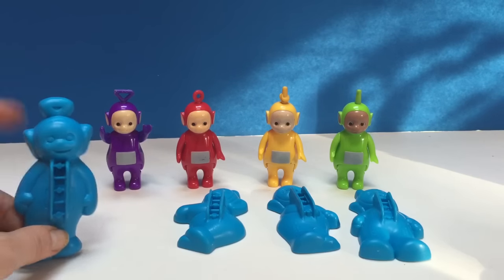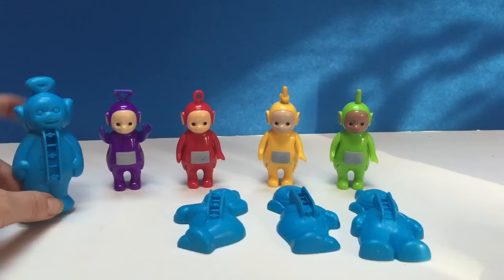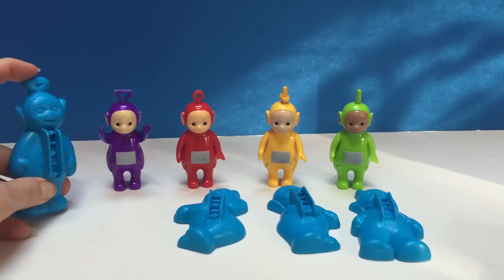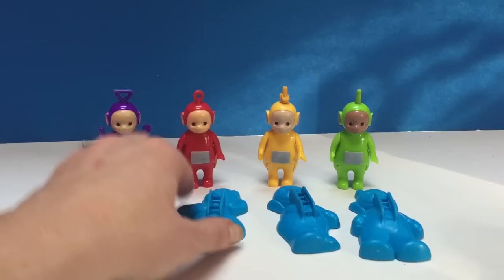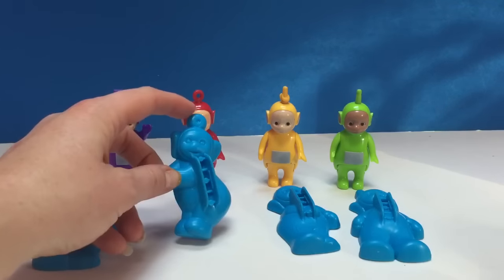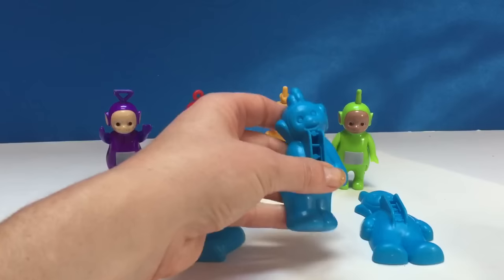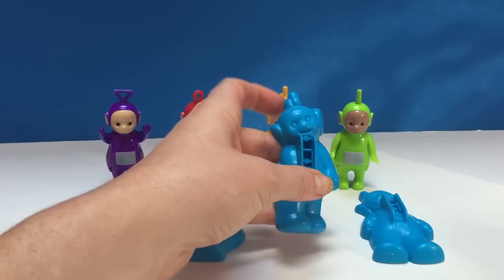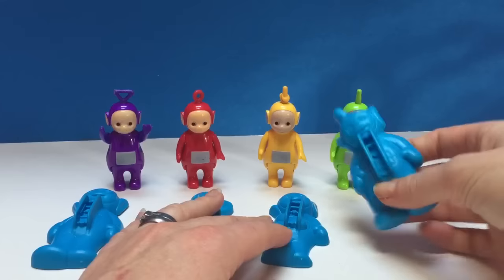So we've got Tinky Winky, and how do we know this is Tinky Winky? You look at the top of their heads. See? It matches. And then the smallest Teletubby is Poe with a little circle on her head. And then we have Lala with a little knot in her head. And last but not least we've got Dipsy.